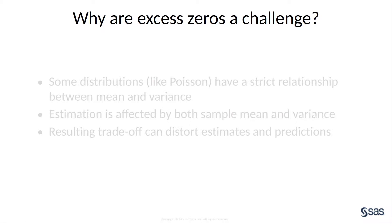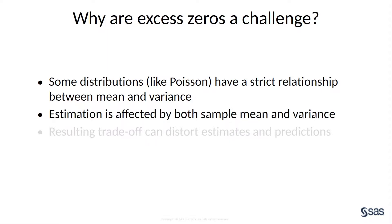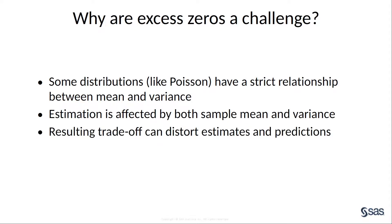So you have excess zeros — why is this a problem? Well, distributions like the Poisson, binomial, and negative binomial have strict relationships between the mean and the variance. One cannot move without the other. When you go through the estimation process, both the mean and the variance will be affected by your data. You're trying to estimate both quantities, and if the data did not fit well with the model, you'll see distortions in your estimates.